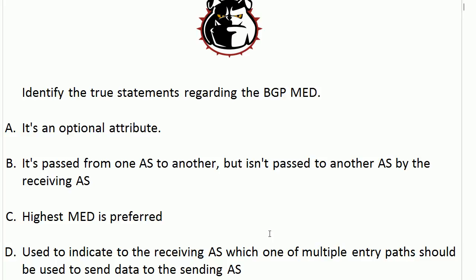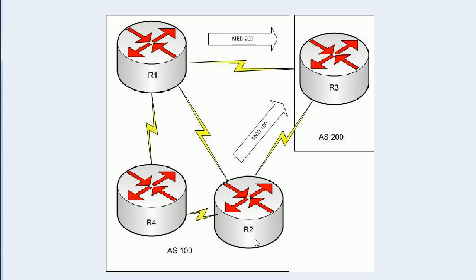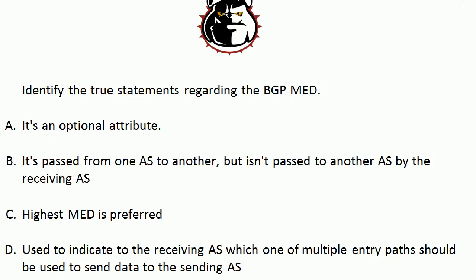Is the highest Med preferred? No — it's actually the lowest Med. So in this particular case, the path from router 3 to router 2 would be the preferred path when R3 is sending data to AS100. The final choice — used to indicate to the receiving AS which one of multiple entry paths should be used to send data to the sending AS — is absolutely true. That's exactly what the Med is.